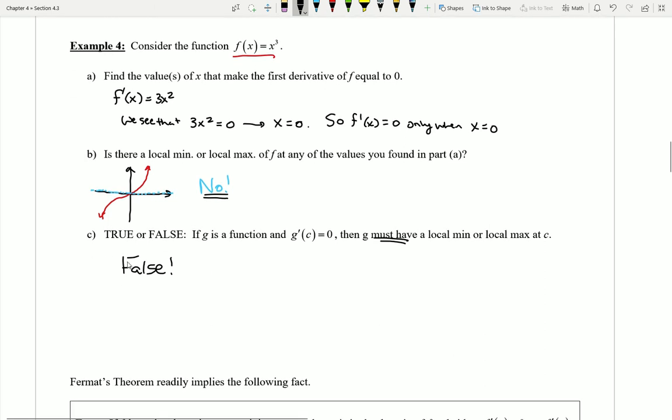So Part C is telling us something really important here. What it's showing us is that spots on the graph where we get a tangent line of slope zero are kind of like potential candidates for where there might be mins and maxes.